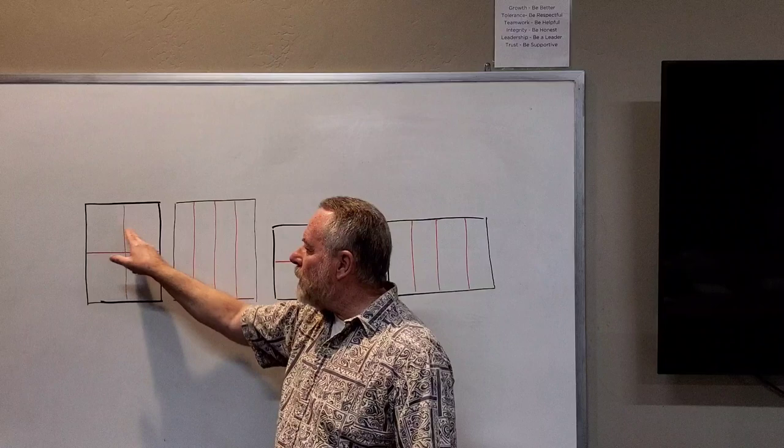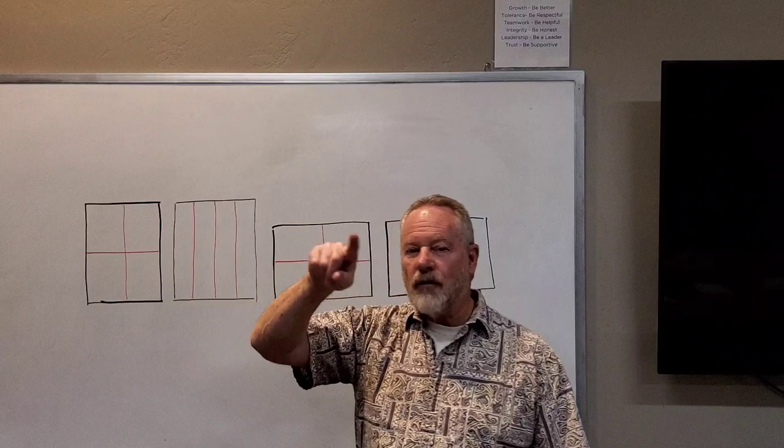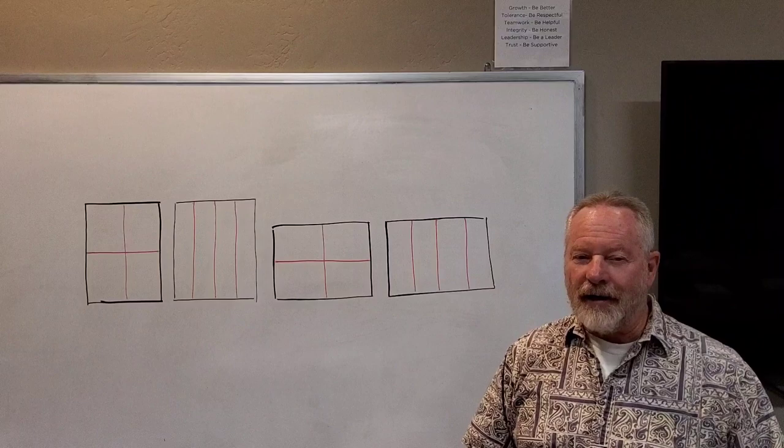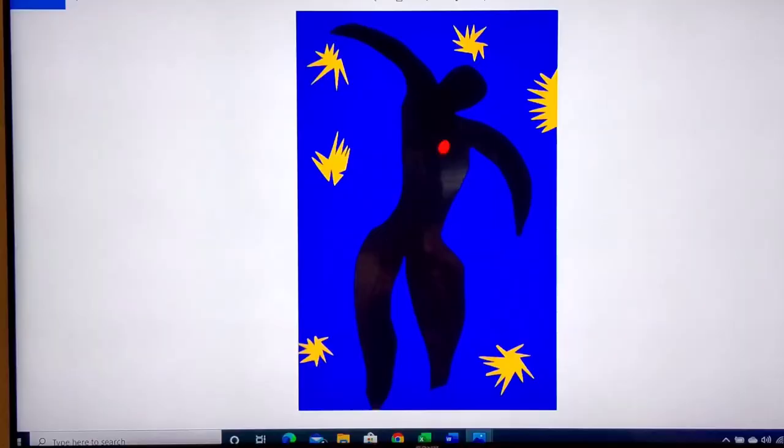Now if you're going to do it in a quadrant like this, you can either go 1, 2, 3, 4, or you can go 1, 2, 3, 4 the other direction. Just make sure that they're connected. So let's look and see what I did.